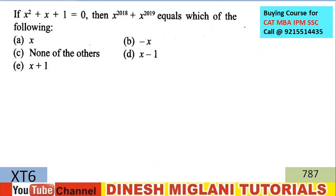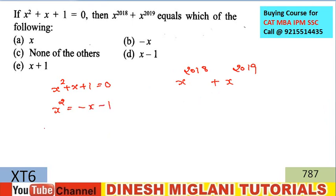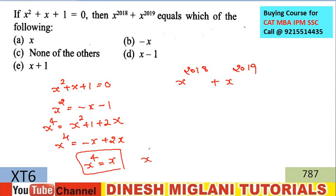Let's have the next problem. Given that x² + x + 1 = 0, find the value of x^2018 + x^2019. Since x² = -x - 1, squaring both sides gives x⁴ = x² + 1 + 2x. Since x² + 1 = -x, we get x⁴ = x, which means x³ = 1. This is the key inference.